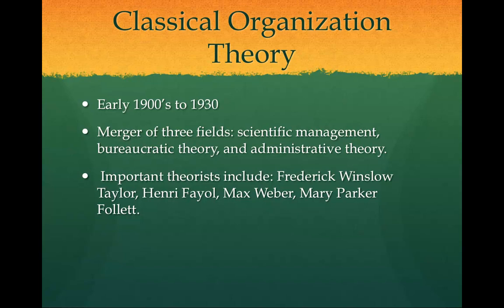Classical organization theory emerged from the early 1900s to 1930. Classical theory is a wide field comprised of the merging of three respective fields: scientific management, bureaucratic theory, and administrative theory. Important pioneers of this theory included Frederick Winslow Taylor, Henry Fayol, Max Weber, and Mary Parker Follett. Before looking at the work of each, let's look at the major assumptions of classical organization theory as a whole.